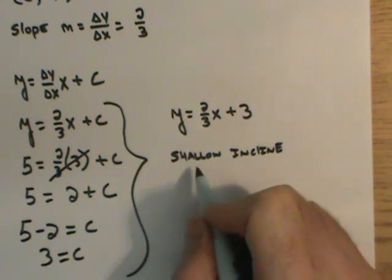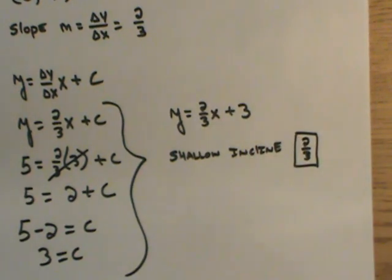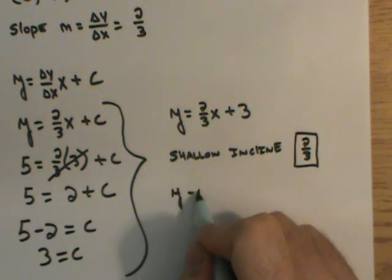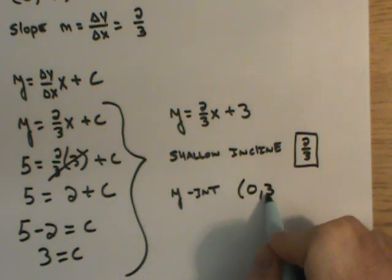And that's because the slope is 2 thirds. Slope of 2 thirds told me I had a shallow incline. And I have a y intercept, as an ordered pair, would be located at 0, 3.